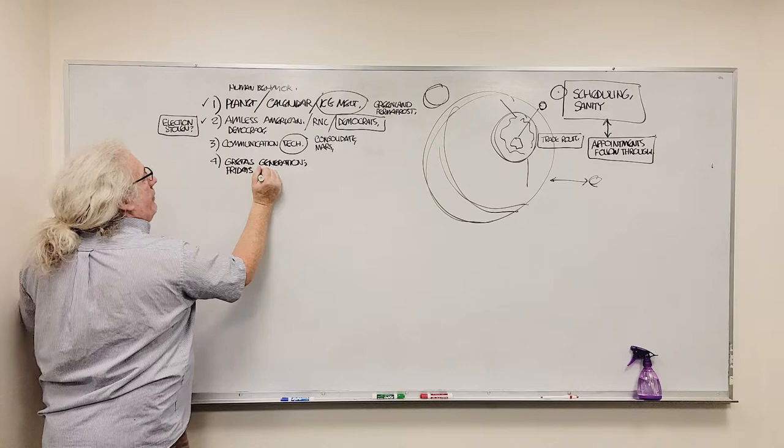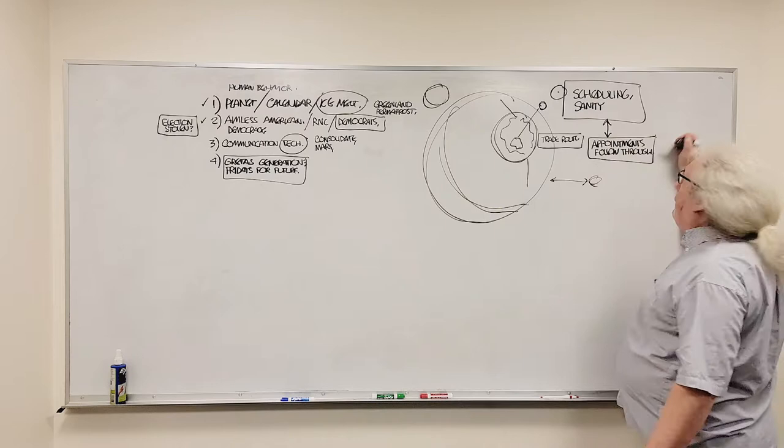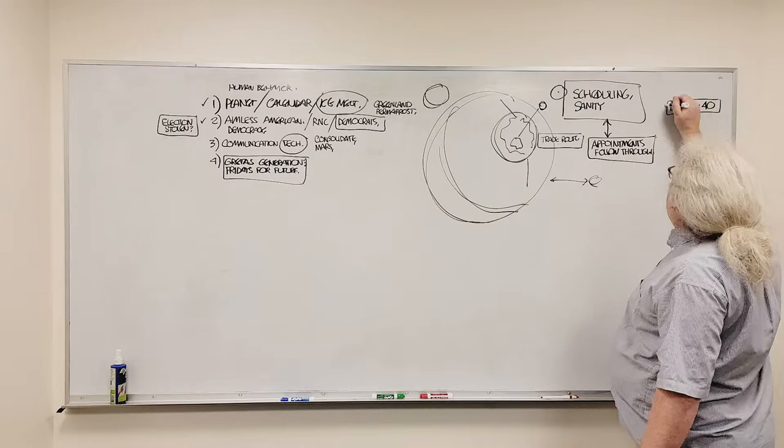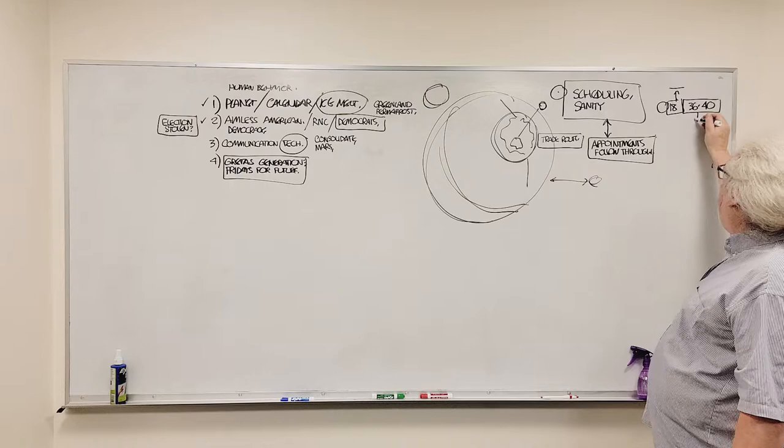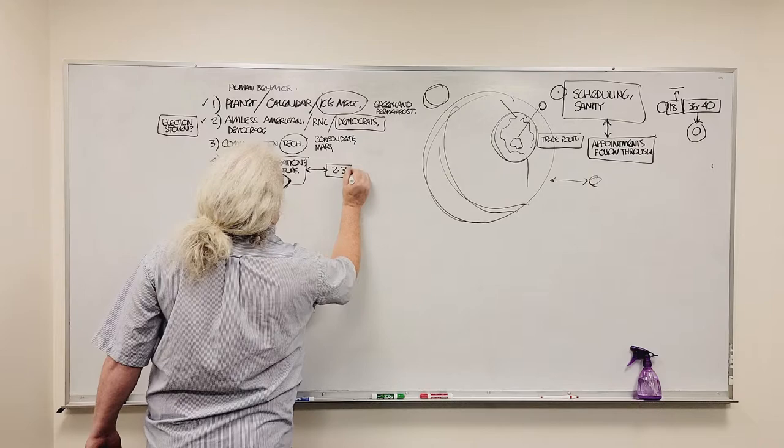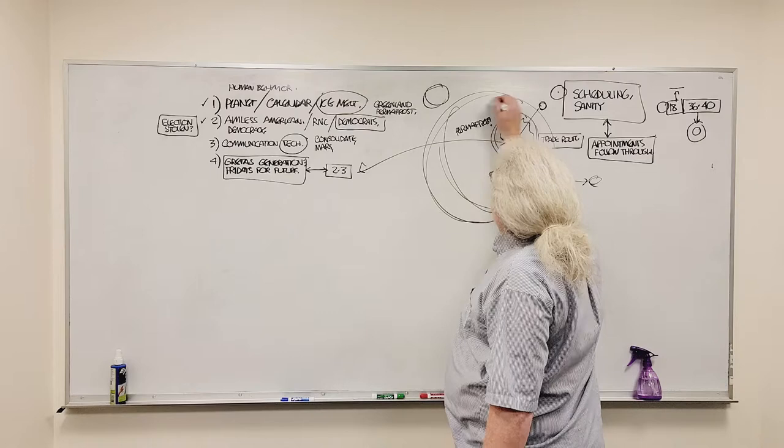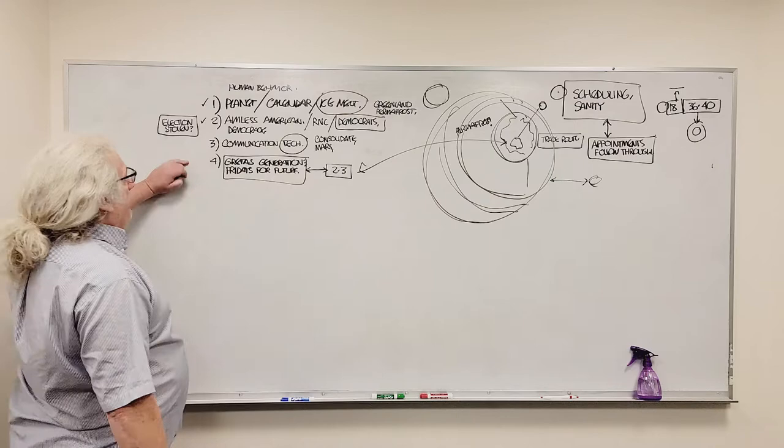And fourth, this is kind of coy and kind of sweet. We have what we could call Greta's Generation. Greta's Generation created something, which may or may not be useful, but it's the only game in town right now, which is called Fridays for Future. What makes this interesting is that Greta, as of right now, is 18 years old. It means her parents are 36 to 40. Let's remember the permafrost makes up like this much of this area.